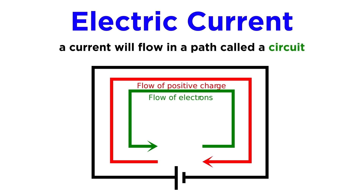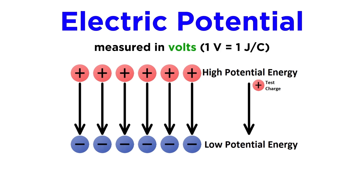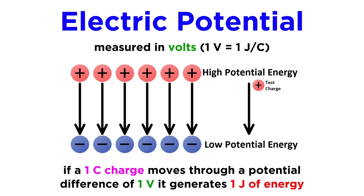A current will always flow in a path called a circuit, which is typically a closed path. The charge flow itself is generated by an electric potential — this is the ability of the electric field to do work, and it is measured in volts, which are joules per coulomb. This means that when one coulomb of charge moves through a potential difference of one volt, it generates one joule of energy.